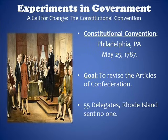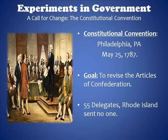A constitutional convention was called, and it was held on May 25th, 1787. It began in Philadelphia, Pennsylvania. The goal was to revise the Articles of Confederation. Fifty-five delegates were sent to this convention. However, Rhode Island sent no one, because they didn't want to be part of something that would overthrow the established government. They liked the way it was, didn't want to hinder democracy, and didn't want to sacrifice their state power to a larger, more powerful central government.